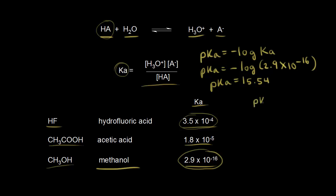So we could write in a pKa column right here. And for methanol, it's 15.54.